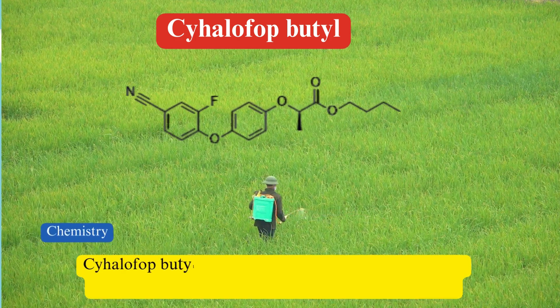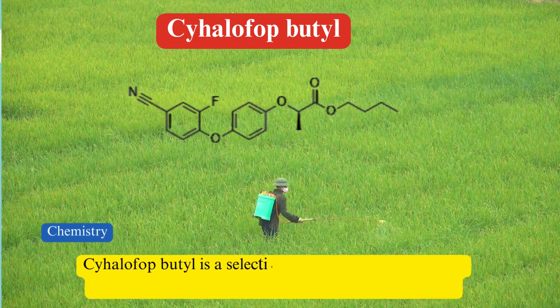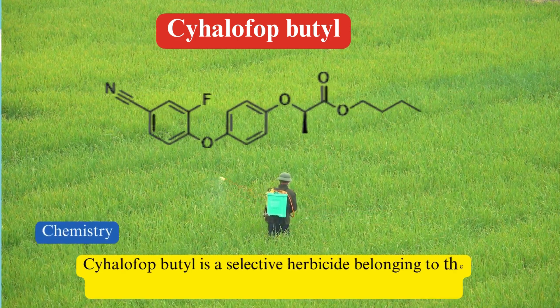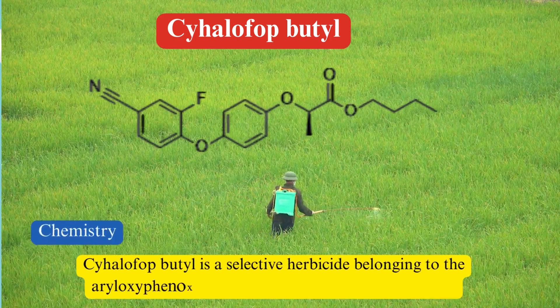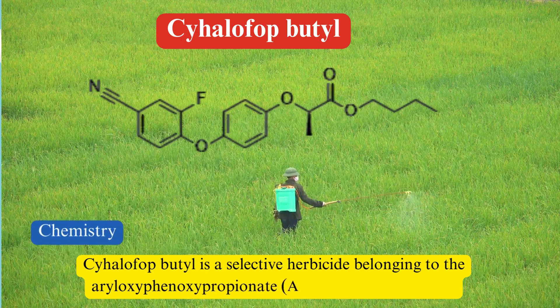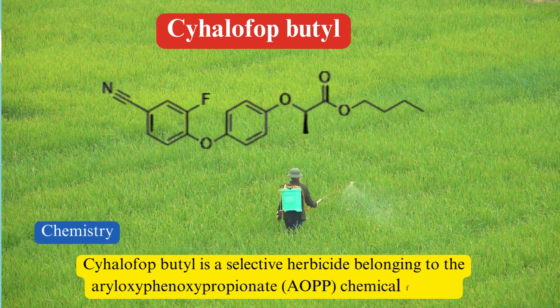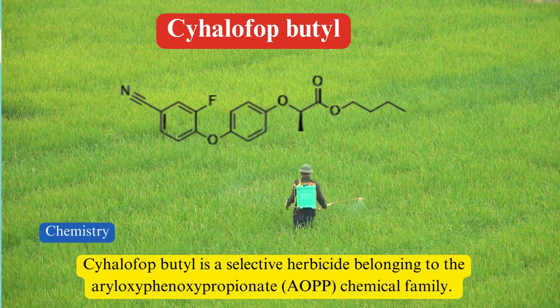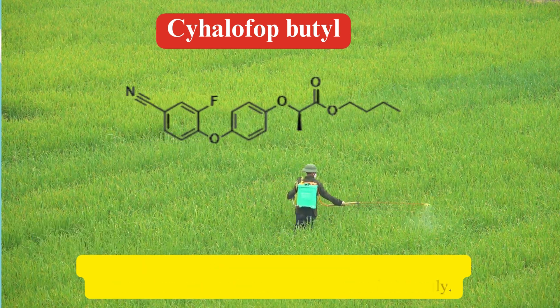Chemistry. Cyhalophop butyl is a selective herbicide belonging to the aryloxyphenoxypropionate (AOPP) chemical family.